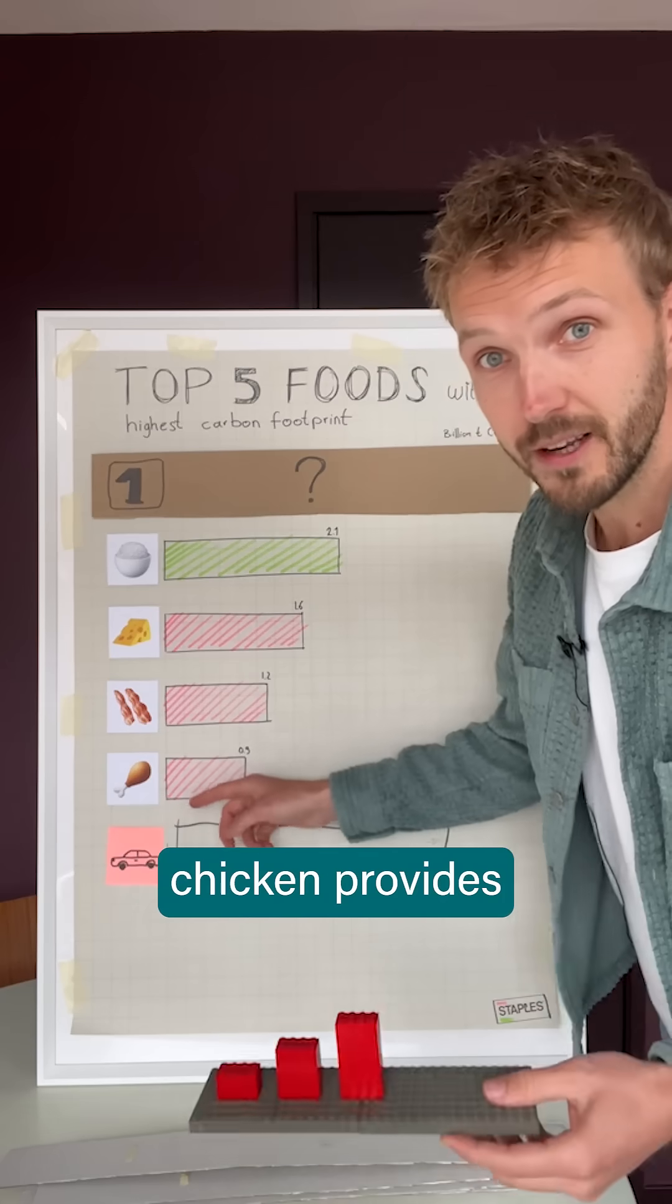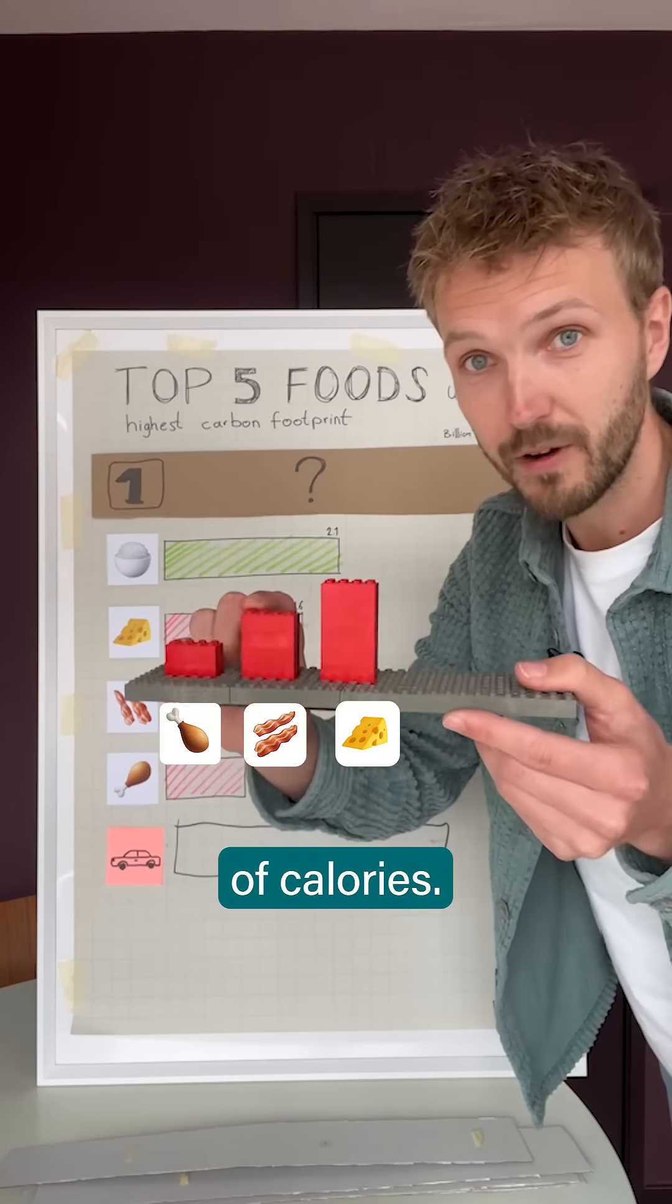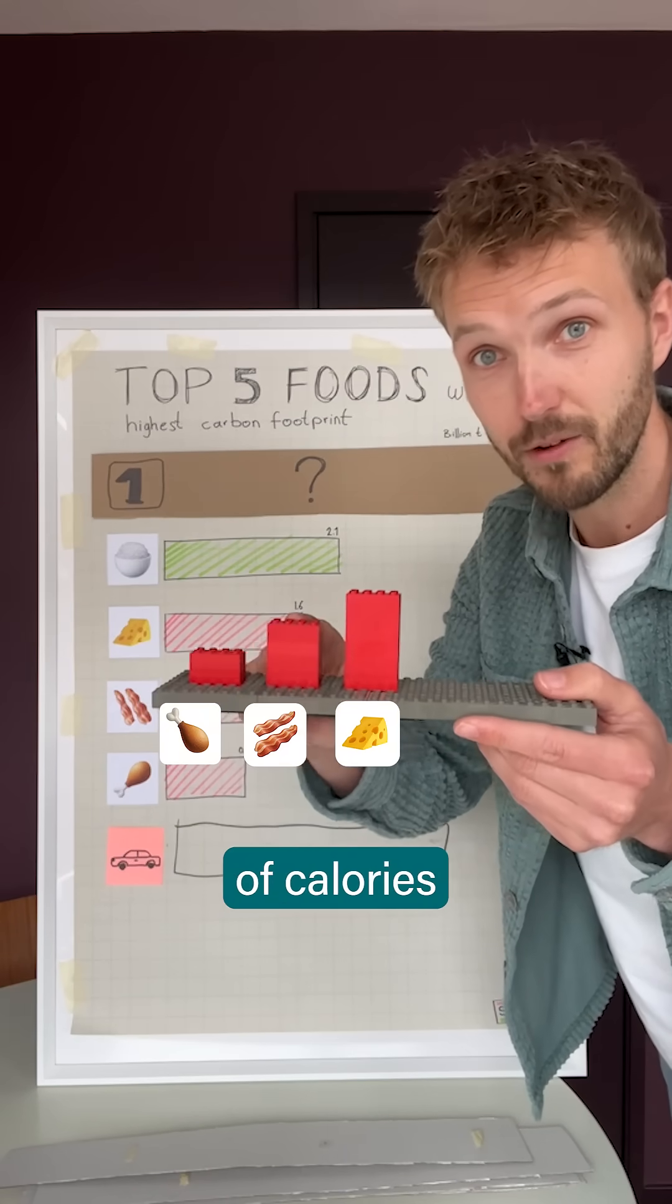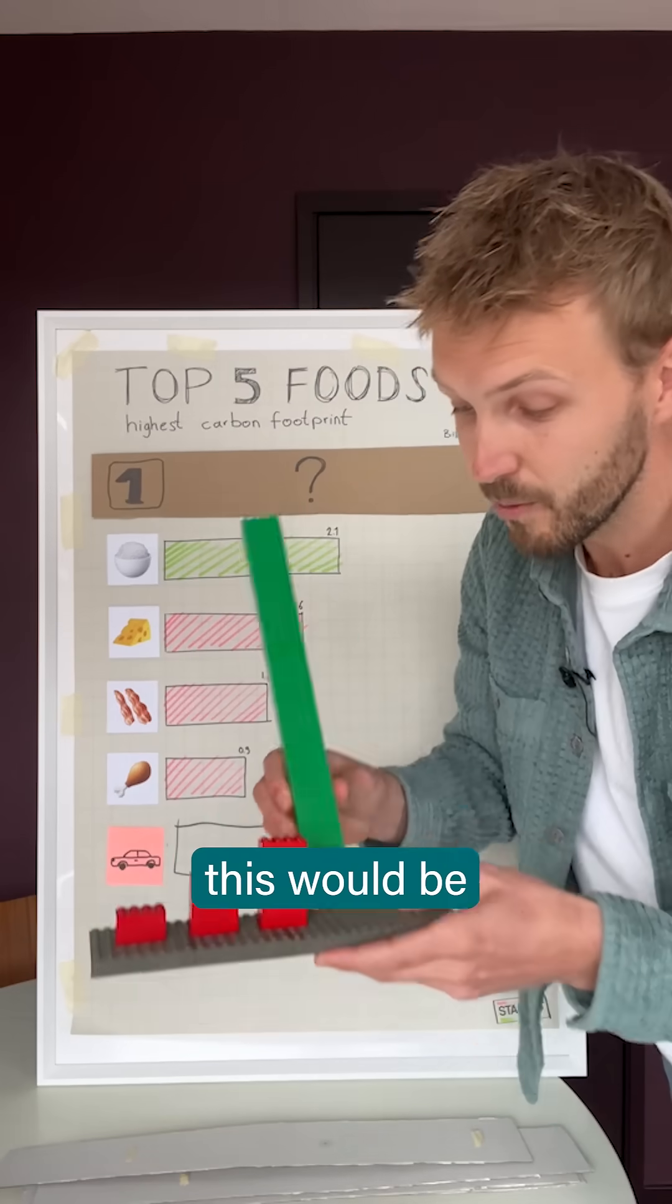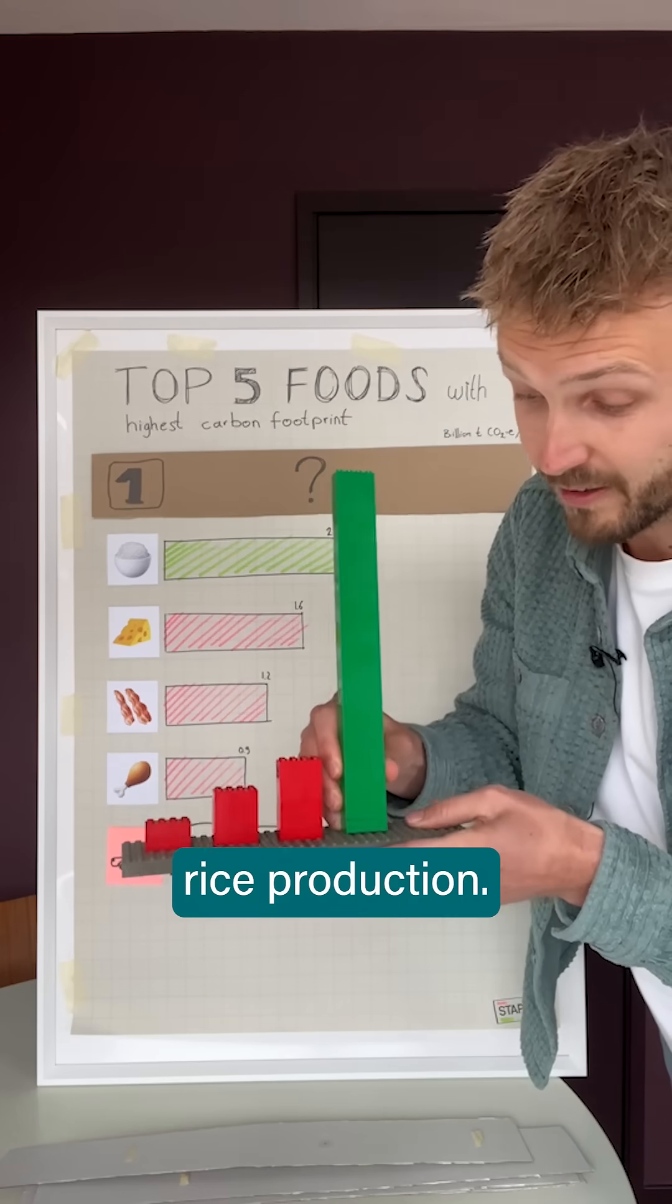And so all this chicken provides this amount of calories. This is the amount of calories from pork. This from milk. And then this would be the amount of calories from rice production.